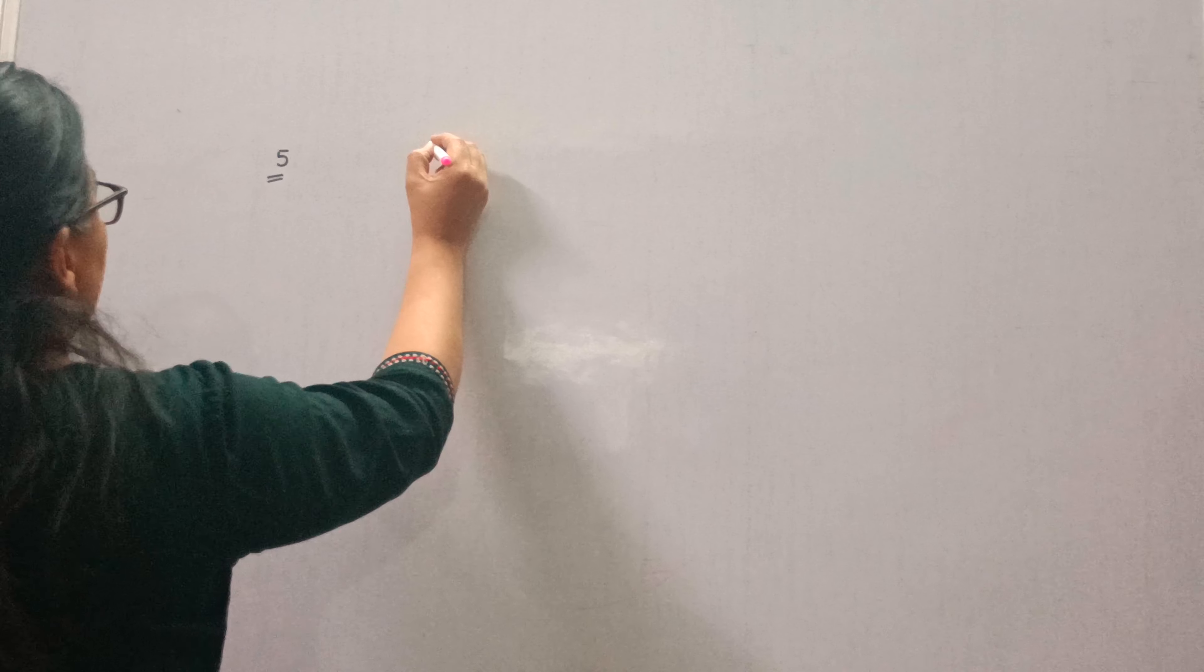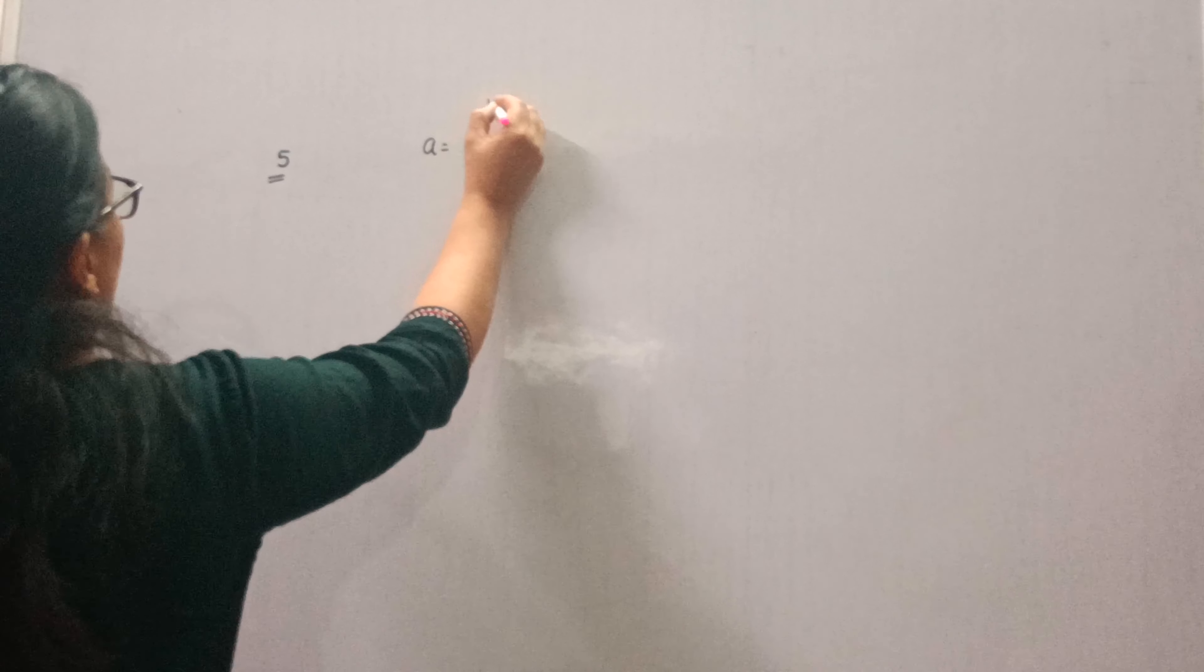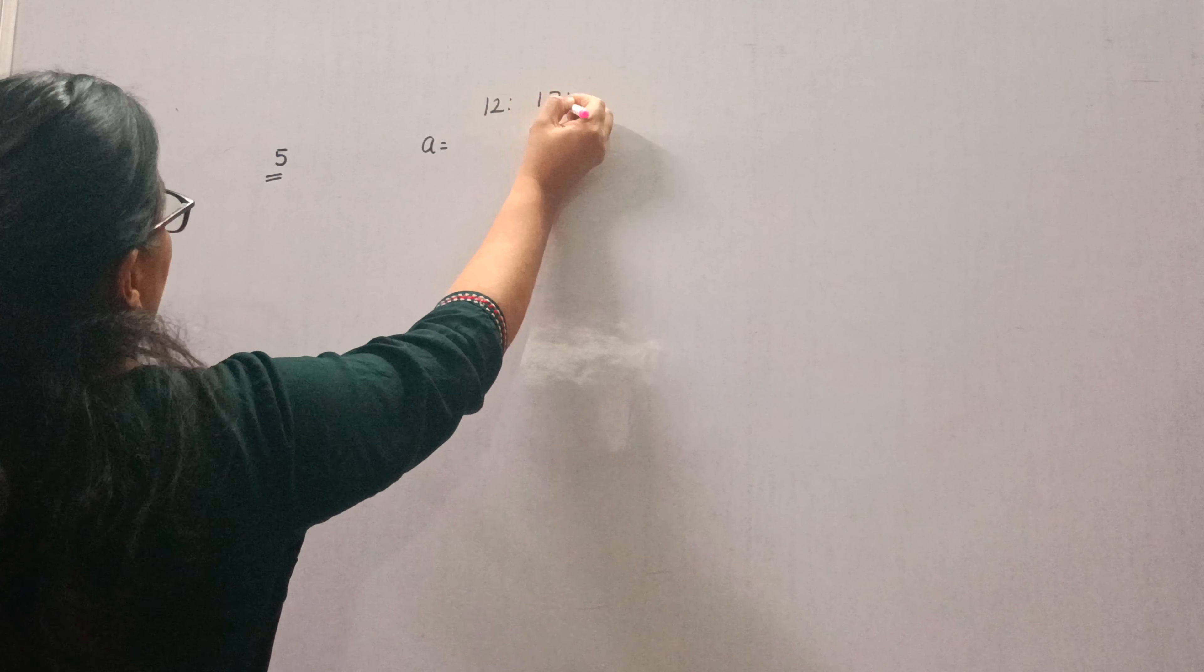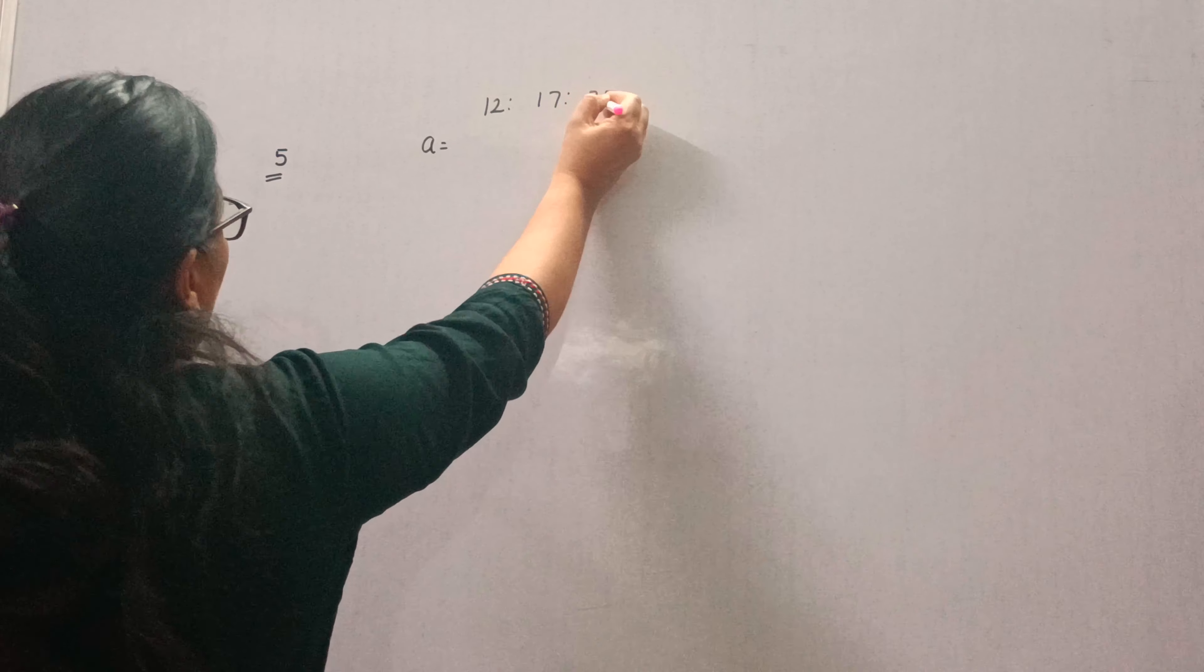Sides of a triangle are in the ratio 12 to 17 to 25 and their perimeter is 540.